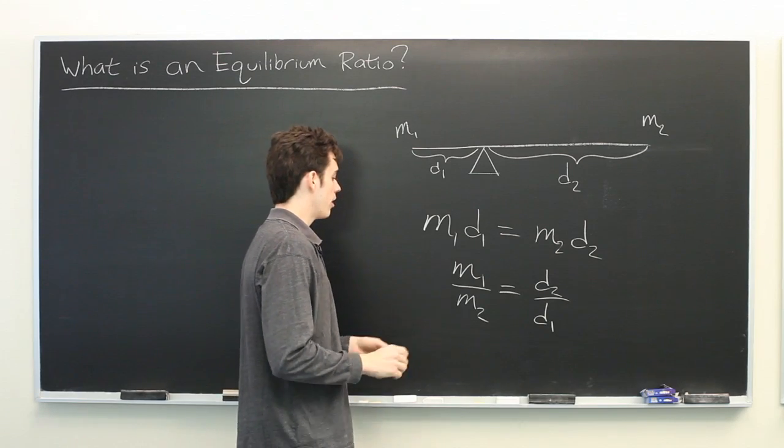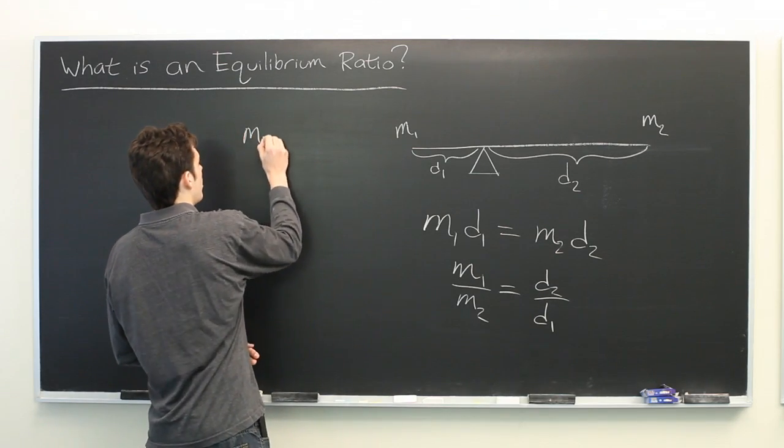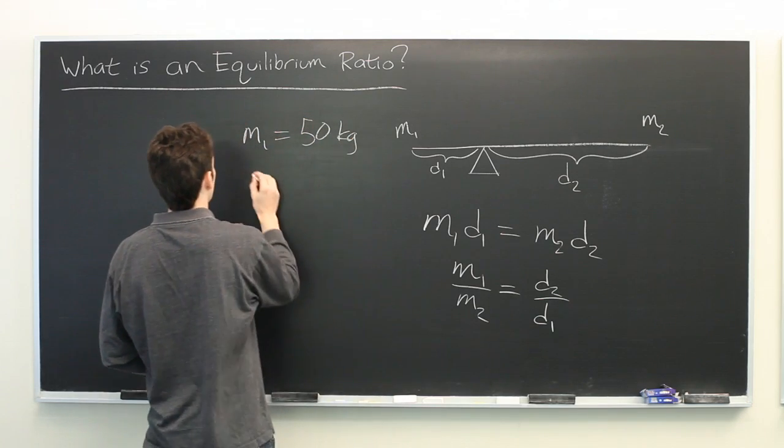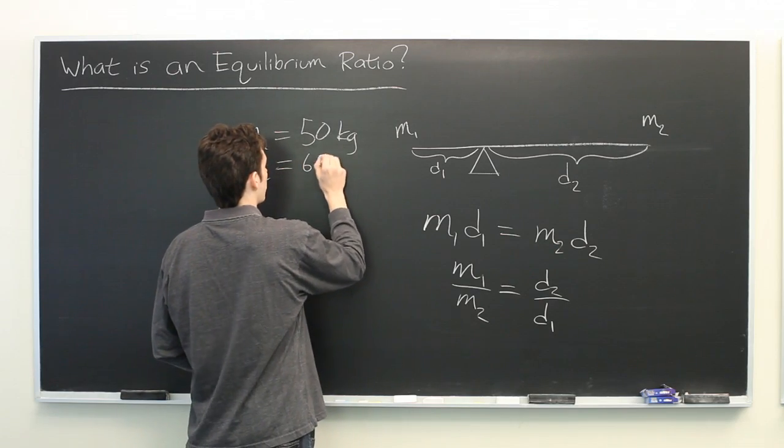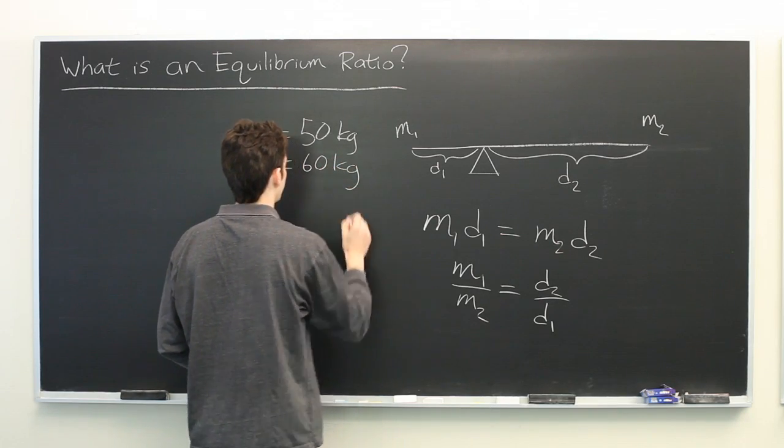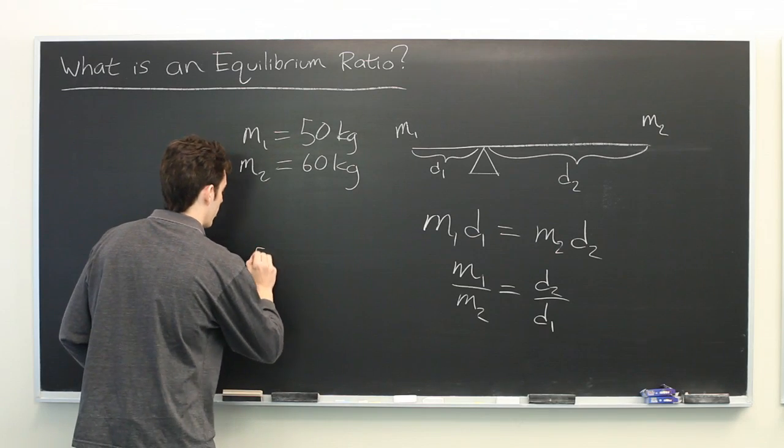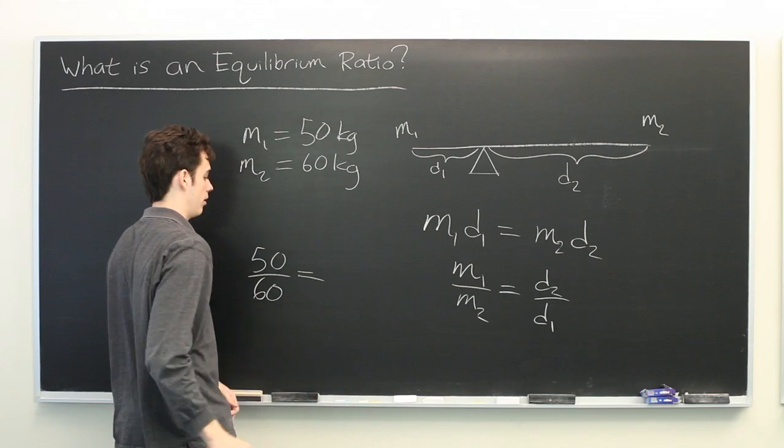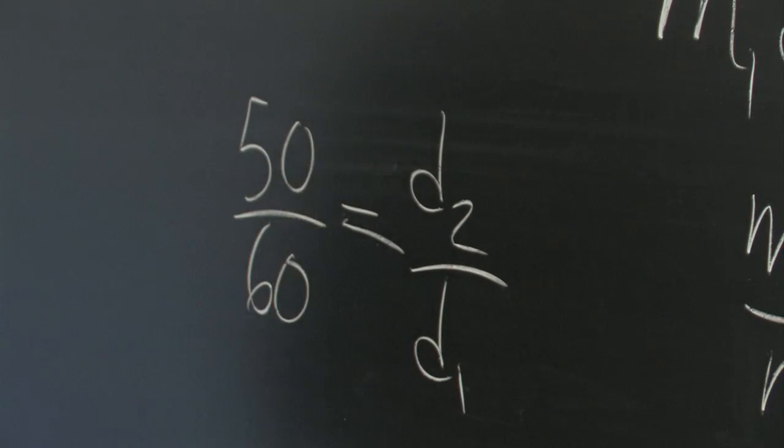So, if you happen to know, for example, that M1 is equal to 50 kilograms, and M2 is equal to 60 kilograms, well, we know that 50 over 60 is going to be the ratio D2 over D1.